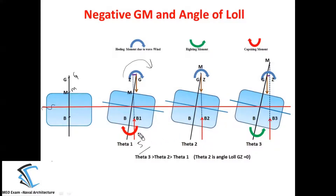At this angle, the buoyant force acts through the new center of buoyancy B1, and the line of action intersects the centerline at the metacenter. Extending that line and drawing a perpendicular from G, we get GZ — the righting lever. At 5° with negative GM, the moment generated is in the same direction as the heeling moment, so this is a capsizing moment and the ship inclines further towards starboard.